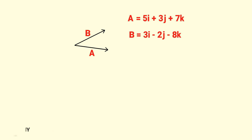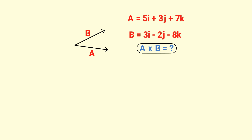If asked to find the cross product of A and B, let me teach you a very simple method. First, look at the order of multiplication in the cross product. A cross B is totally different from B cross A, so you must be careful about the order of cross multiplication of two vectors.